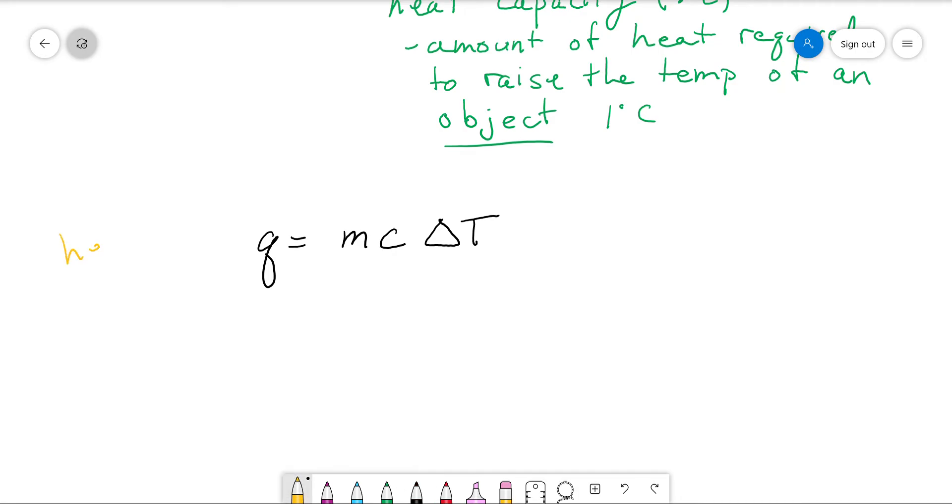Q is heat, still in joules, nothing's changed there. M should be familiar with - that's just mass in grams. Delta T still T final minus T initial, units of degrees Celsius.